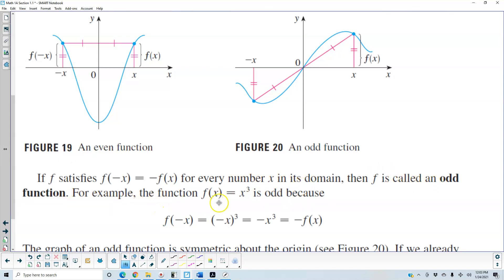For example, the function f(x) = x³ is odd because if we use the input of negative x and plug it into x³,